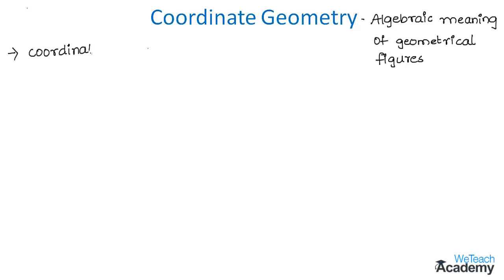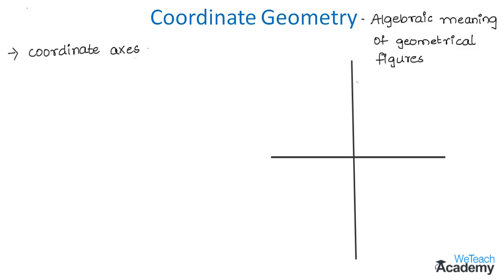The first topic we are going to deal with is coordinate axis. Let us consider a pair of mutually perpendicular lines with reference XX' and YY'. These straight lines are called coordinate axes, and their point of intersection is called the origin, denoted by the letter O. We term the horizontal line as the x-axis and the vertical line as the y-axis.